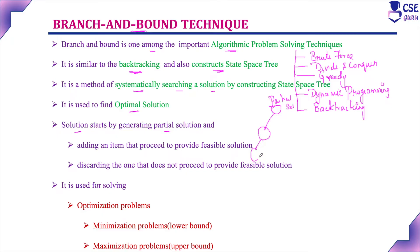From this partial solution, it will try to add an item. If this item satisfies the problem constraint, this is called a feasible solution. At the next level, it will try to add an item that tries to provide the feasible solution. Suppose the addition of an item does not proceed to provide the feasible solution, discard that item. Whenever you are adding an item, it has to provide the feasible solution; otherwise, discard that item. Likewise, the construction of the state space tree will proceed in branch and bound technique.